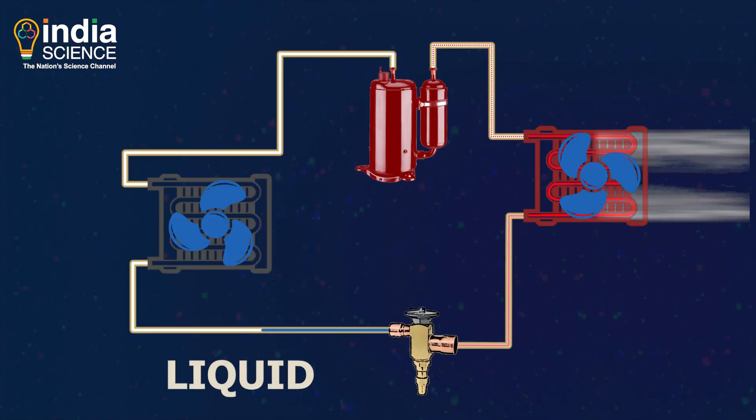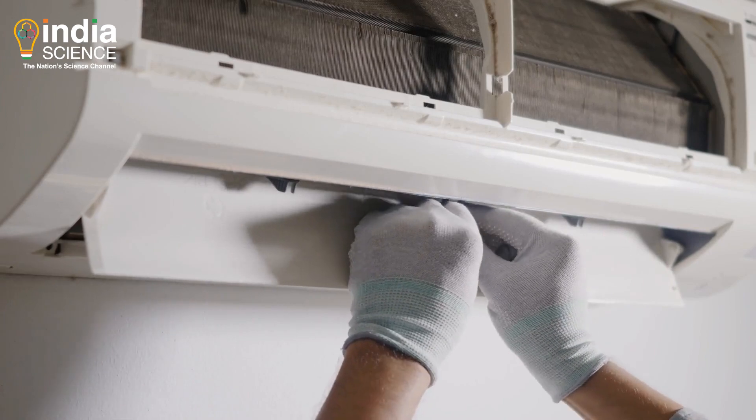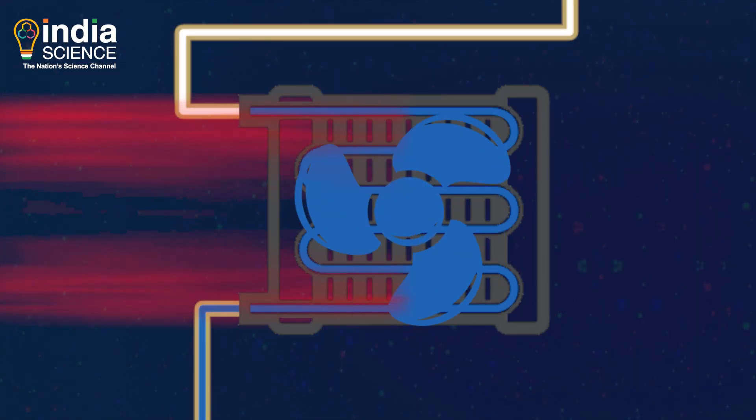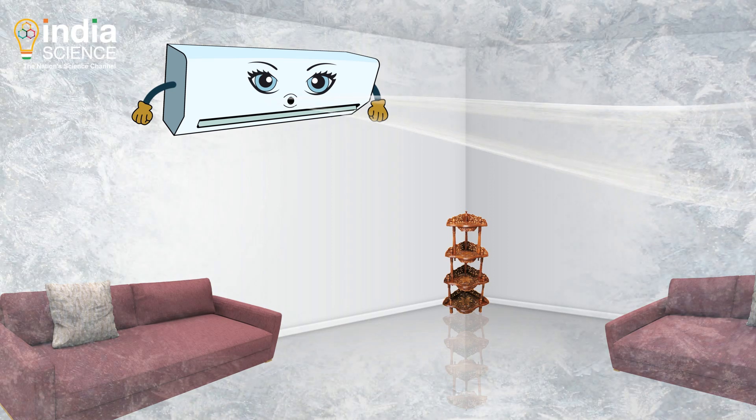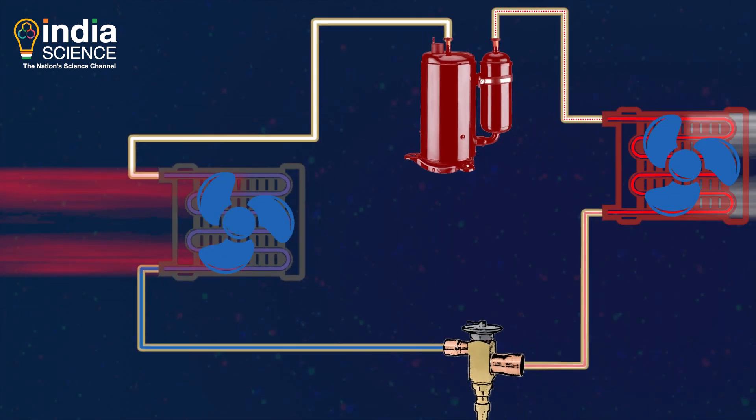Now, this cold liquid refrigerant enters the evaporator coils. The evaporator coils are in the indoor unit of the air conditioner. Now, the fan blows the room heat on the cold evaporator coil and the cold liquid refrigerant flowing inside absorbs that heat. As the room's heat is absorbed by the cold refrigerant, the room starts to get chilled and the liquid refrigerant changes its state to gas.